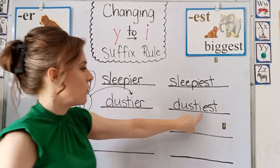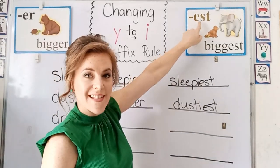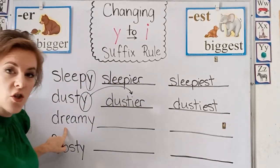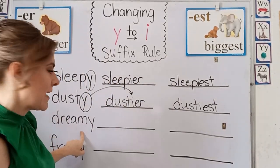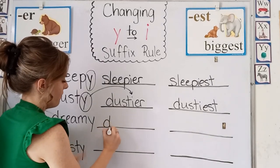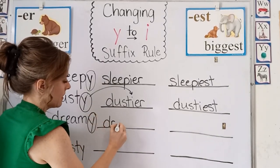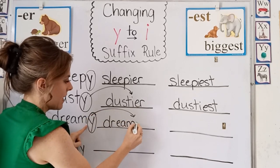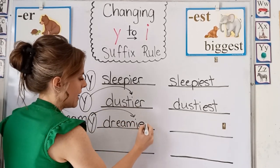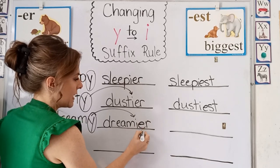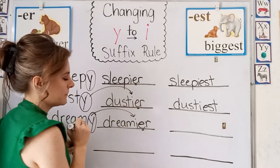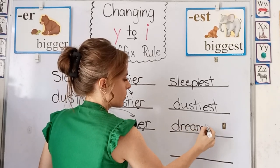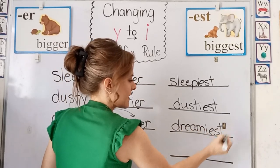We changed the Y to an I and then we added our suffix that began with an E. Here we have dreamy. We have the Y at the end, so we are going to change the Y into an I and add our suffix that begins with an E. Dreamiest.